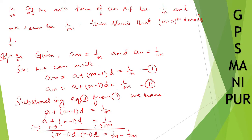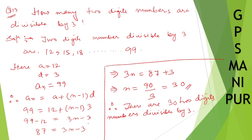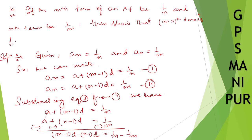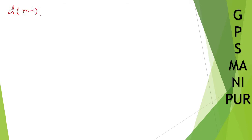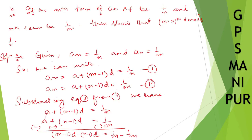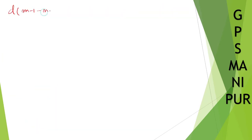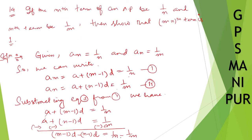So we have (m minus 1)d minus (n minus 1)d. Taking d common, we get d times [(m minus 1) minus (n minus 1)] equal to 1/n minus 1/m.